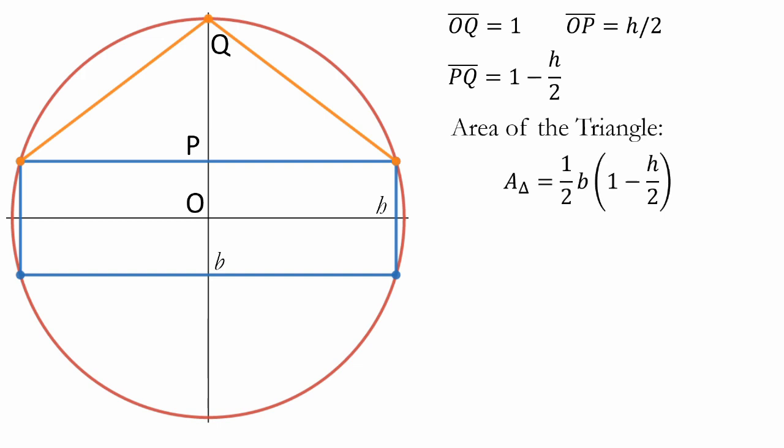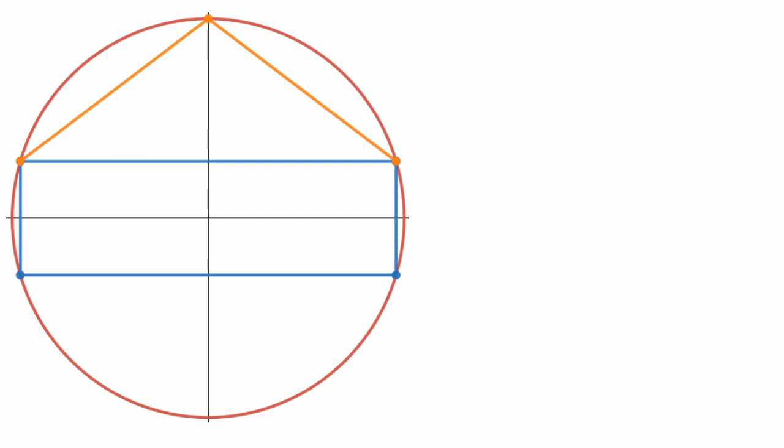Therefore, the area of the triangle is equal to one-half b times the quantity one minus h over 2. And the area of the rectangle is simply b times h. Since the problem statement told us that the areas have to be the same, we'll set the two expressions we just got to be the same value.